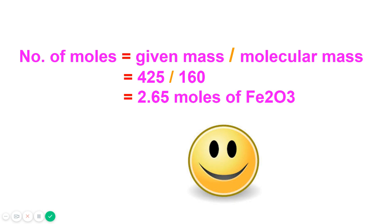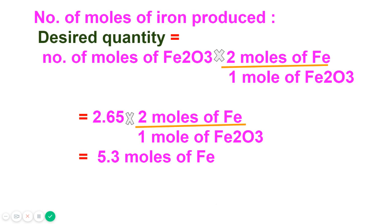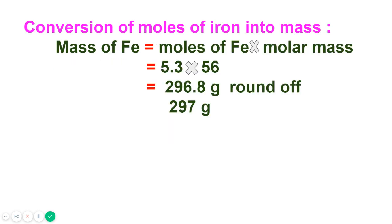Number of moles of ore = given mass ÷ molar mass = 425 ÷ 160 = 2.65 moles of iron ore. Now find the moles of iron produced. The desired quantity equals moles of ore × conversion factor: 2.65 × (2 moles Fe / 1 mole Fe₂O₃) = 5.3 moles of iron, since 1 mole of Fe₂O₃ produces 2 moles of iron.